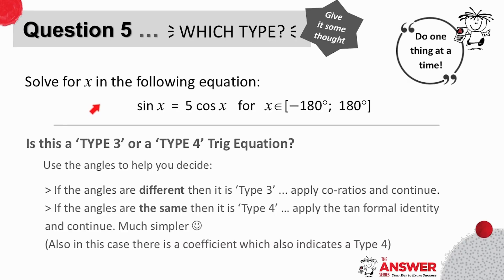We've included a fifth question here to illustrate what to look for when deciding between a type 3 and type 4 equation. First of all, we can see straight away that this isn't an example of type 1, as the right-hand side cannot be a numerical value, nor an example of type 2, as the ratios are different.